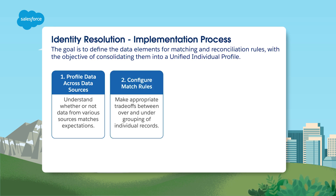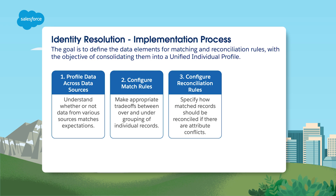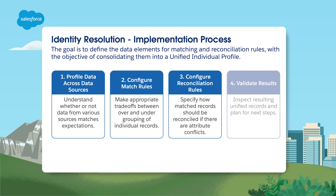Next, configure your matching rules to define the criteria that link individual records from those different data sources. Then set up the reconciliation rules to choose what data will be selected when data sources conflict. Reconciliation rules specify how to select the best value for saving to the unified profile in the event of conflicts. However, they don't apply to contact points such as email or phone numbers, which will still remain part of the unified profile and are accessible for creating activations for segments. Lastly, you need to validate your results. Work through your resolution summary results and check that records have been correctly assigned to the correct unified profile.